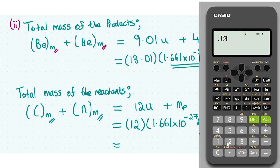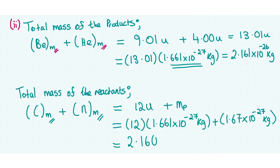We have 12 times the unified atomic mass unit, which is 1.661 times 10 to the power of minus 27, plus the mass of the neutron, which is equivalent to the mass of the proton, 1.67 times 10 to the power of minus 27, which equals 2.1602 times 10 to the power of minus 26. When rounded to three decimal places, this gives us 2.160 times 10 to the power of minus 26 kilograms.